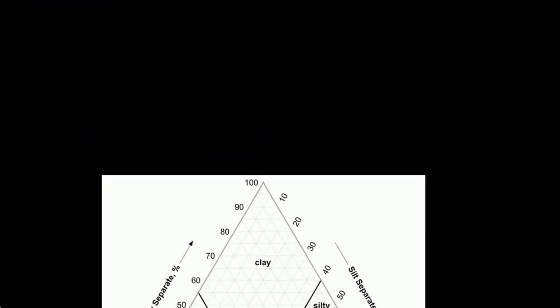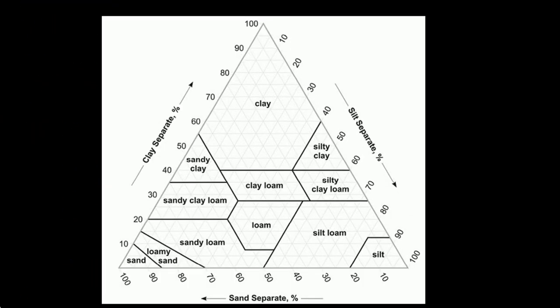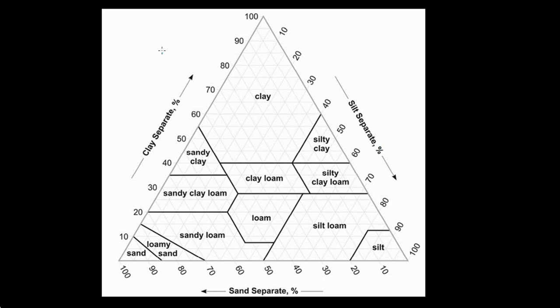If you don't know how to read this, don't worry. That's what this video is all about. I'll show you how to read this really quickly. It's not too difficult. This texture triangle has three sides: on one side you have clay, on another side you have silt, and finally you have sand down here.